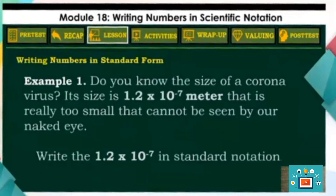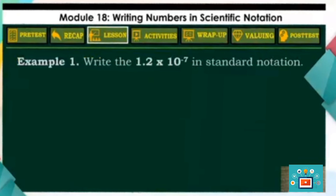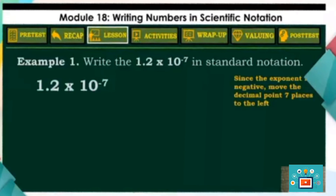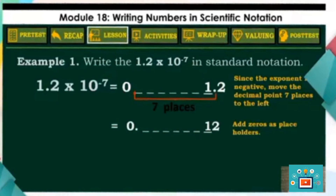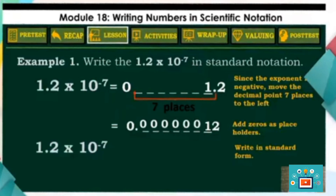Do you know the size of a coronavirus? Each size is 1.2 times 10 to the negative 7 meters — that is really too small to be seen by our naked eye. How is 1.2 times 10 to the negative 7 written in standard notation? Since the given number has a negative exponent, the decimal point in 1.2 should be moved 7 places to the left, then add zeros as placeholders. Therefore, 1.2 times 10 to the negative 7 is equal to 0.00000012.